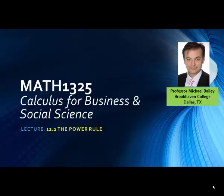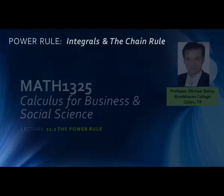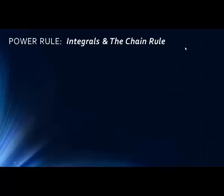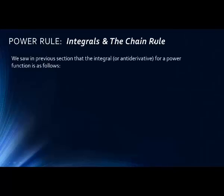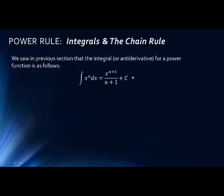Welcome to lecture 12.2 on the power rule for calculus for business and social science. We saw in a previous section that the integral or the antiderivative for a power function works as follows: when taking the integral of something raised to the power of n, the antiderivative is found by increasing the power by 1 and multiplying by 1 over the new power, then adding the constant of integration.